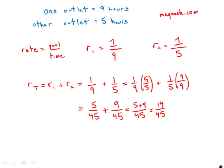This tells us we could fill fourteen pools in forty-five hours, but we want to know how long it takes to fill one pool. Using amount equals rate times time: 1 = (14/45)T. Solving for T by multiplying by the reciprocal, T = 45/14.